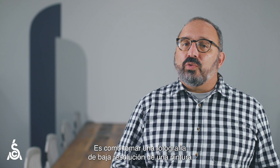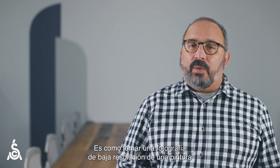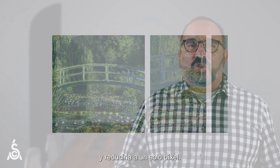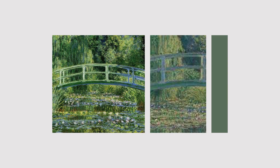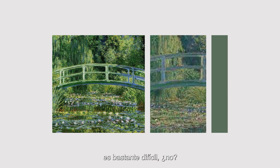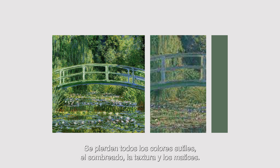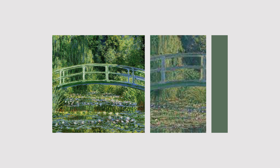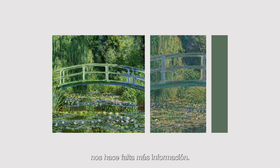It's sort of like a low-res photo of a painting and trying to turn it into a single pixel — try describing that painting based on that single pixel. It's pretty difficult, right? All those subtle colors, the shading, the texture, all that nuance get lost. To give a complete sense of the picture, we must have a more complete sense of the information of that coffee.